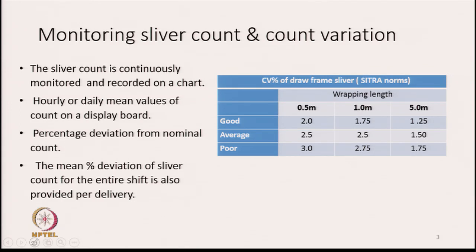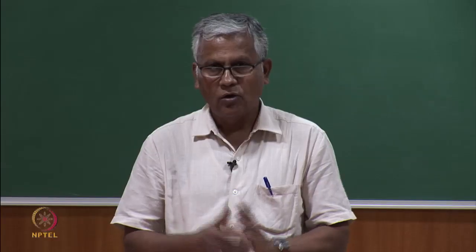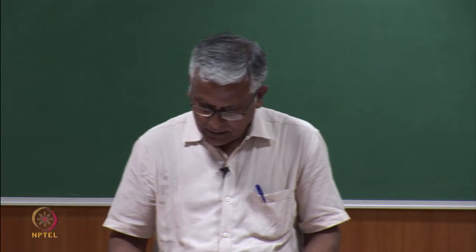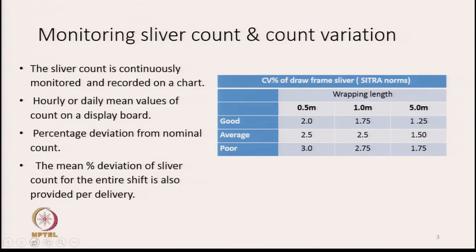This data is very helpful. Percentage deviations from the nominal count, if any, will also be recorded. The mean percentage deviation of sliver count for the entire shift is provided per delivery. Generally machines have two deliveries, and for both deliveries all this information will be available. A table of CITRA norms is provided, giving an idea of what sort of variation is expected in a drawn sliver as we change the wrapping length, and what is considered good, average, and poor.